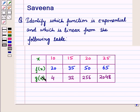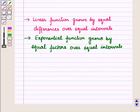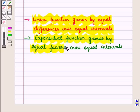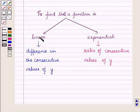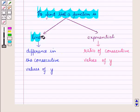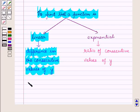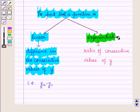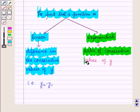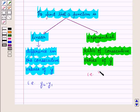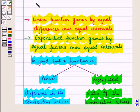Before starting the solution we should know a key result: a linear function grows by equal differences over equal intervals, and an exponential function grows by equal factors over equal intervals. To check for linearity we find the difference of consecutive y values, y2 minus y1. To check for exponential growth we find the ratio of consecutive y values, y2 divided by y1.